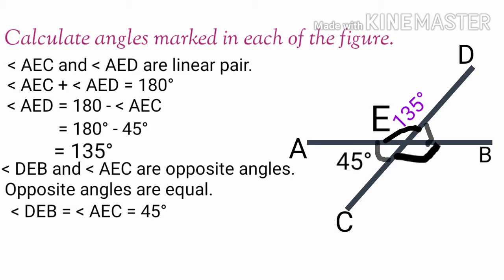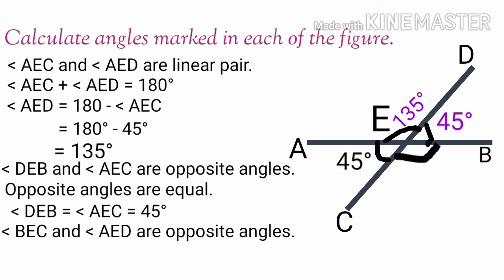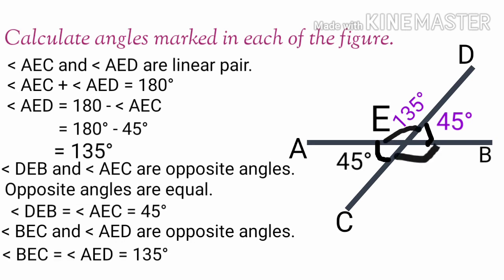Angle DEB and angle AEC are opposite angles. Opposite angles are equal, therefore angle DEB is equal to angle AEC, that is equal to 45 degrees. Angle BEC and angle AED are opposite angles and they are equal, therefore angle BEC is equal to angle AED, that is equal to 135 degrees.